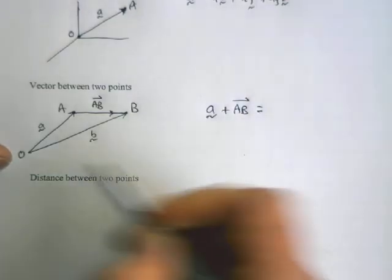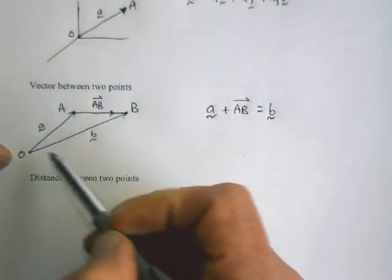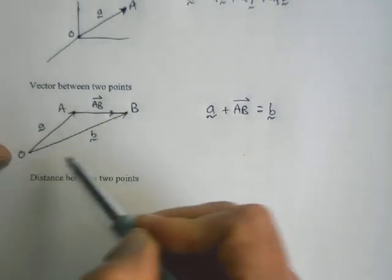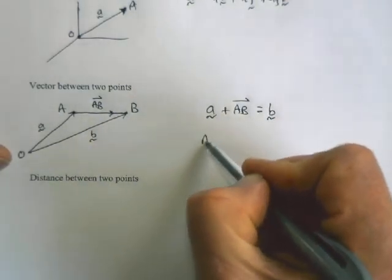So plus the vector AB is exactly the same as if we'd started at the origin and gone to point B. Okay, so we could go A plus AB is the same as B.